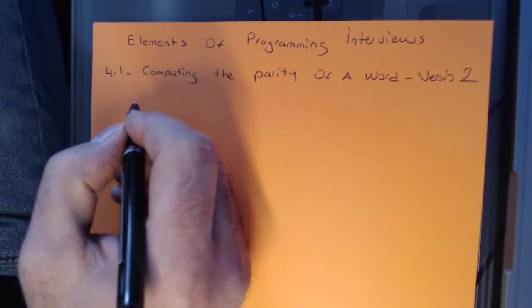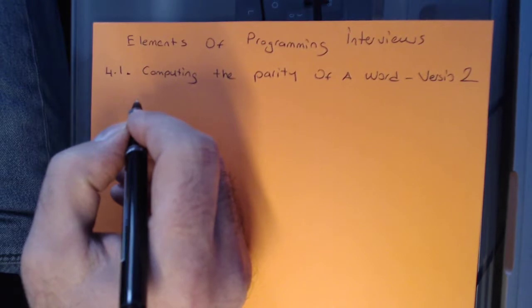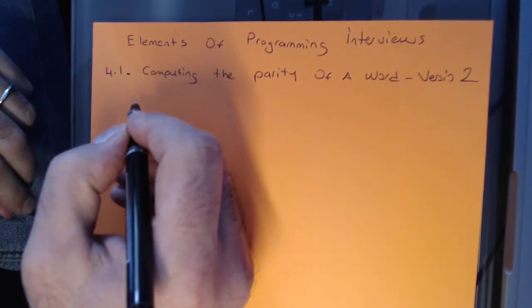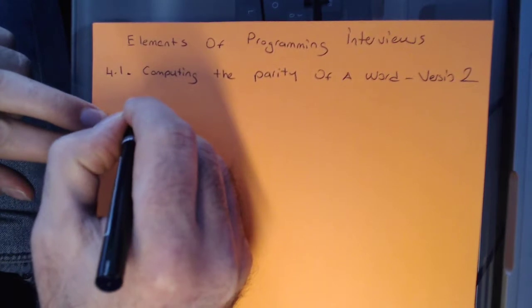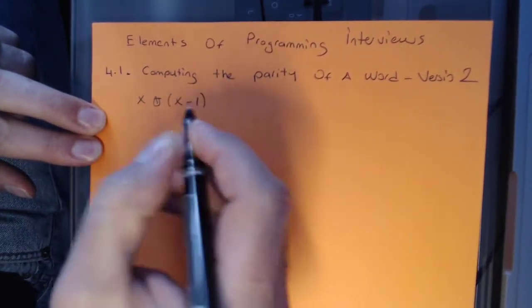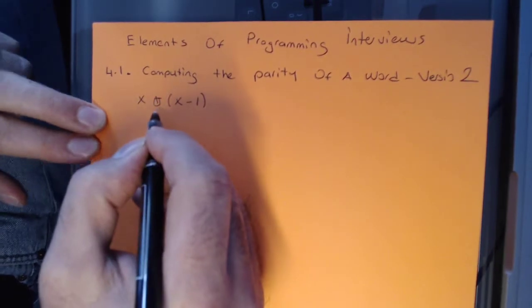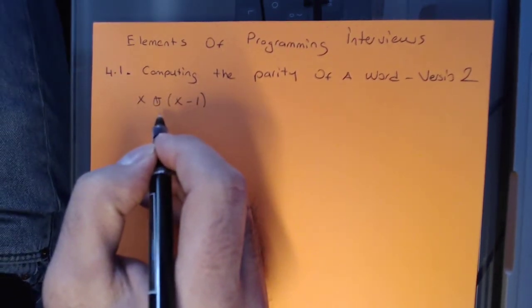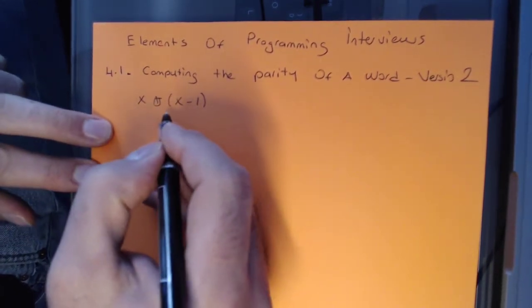So this particular solution is actually using a pretty cool bit fiddling trick, and the trick is basically X & (X-1). If you apply this bitwise operation, you're basically going to unset the lowest set bit on X.